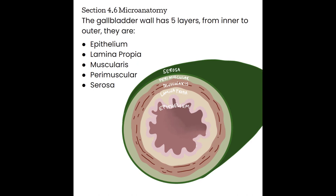Section 4.6, microanatomy. The microanatomy for the biliary tree is minimal. The gallbladder wall is muscular, helping to expel bile when necessary, and has a rugged interior lining that helps reabsorb water and concentrate bile. There are five layers to the gallbladder wall from inner to outer: the epithelium, the lamina propria, the muscularis, the perimuscular layer, and the serosa. Not all five layers are well appreciated by ultrasound, but you can see different echogenicities in the gallbladder wall when it is contracted.